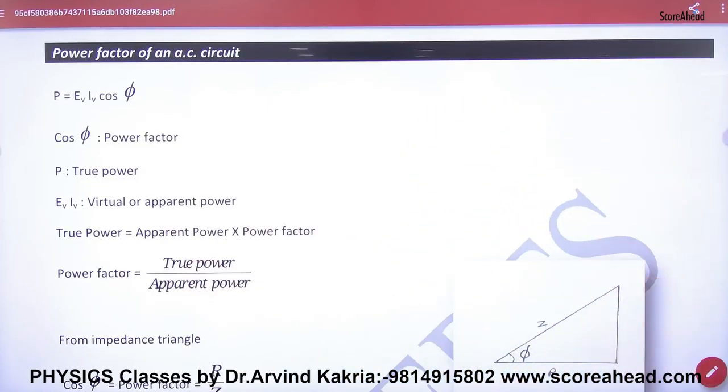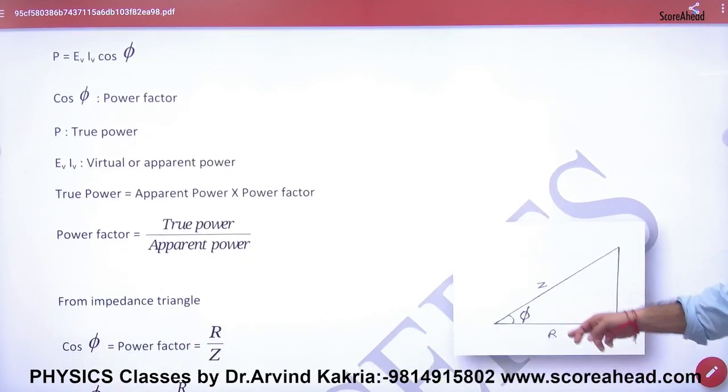What was the impedance triangle? This is R and this is Z. Remember that cos phi. What was cos phi? R by Z.